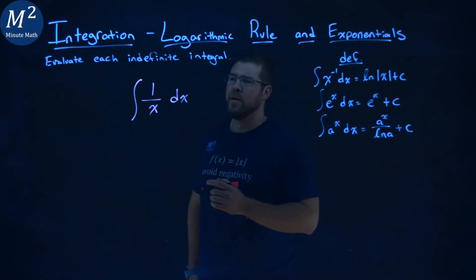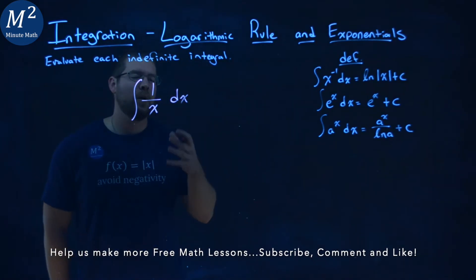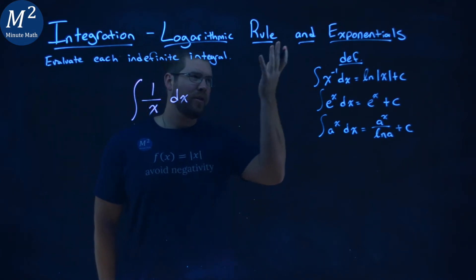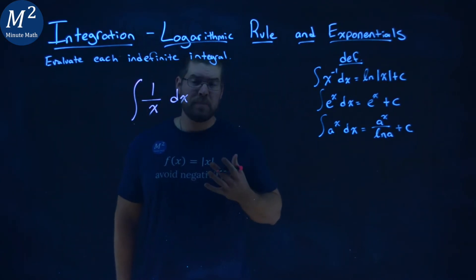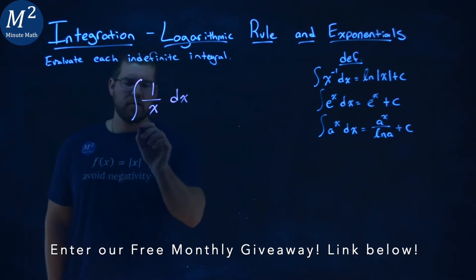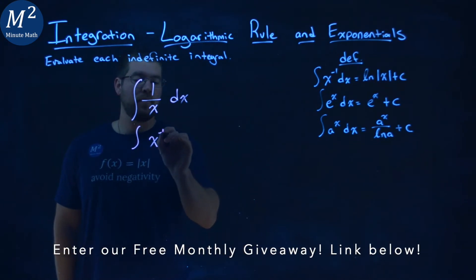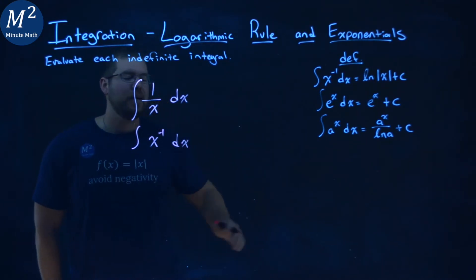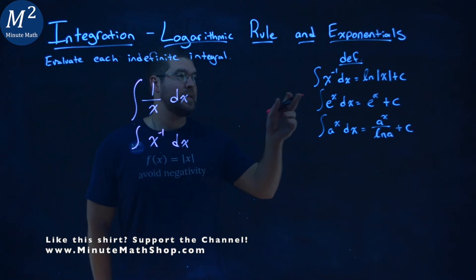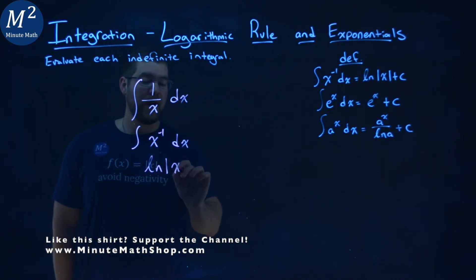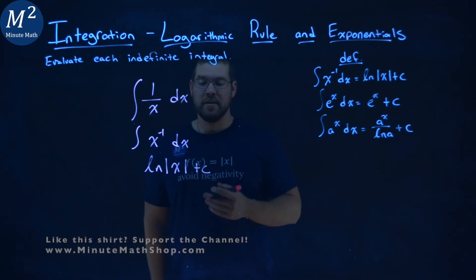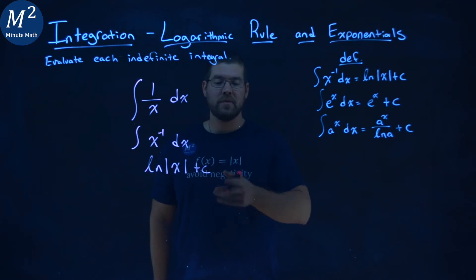We're given this problem right here: the integral of 1 over x dx, and we want to find this indefinite integral. I want to rewrite this to look like one of the definitions that we know. I see that 1 over x is the same thing as x to the negative 1 power, so we have the integral of x to the negative 1 power dx. It's just a plug-and-play with our definition — the integral of x to the negative 1 dx is equal to the natural log of the absolute value of x plus c. Our final answer here is the natural log of the absolute value of x plus c.